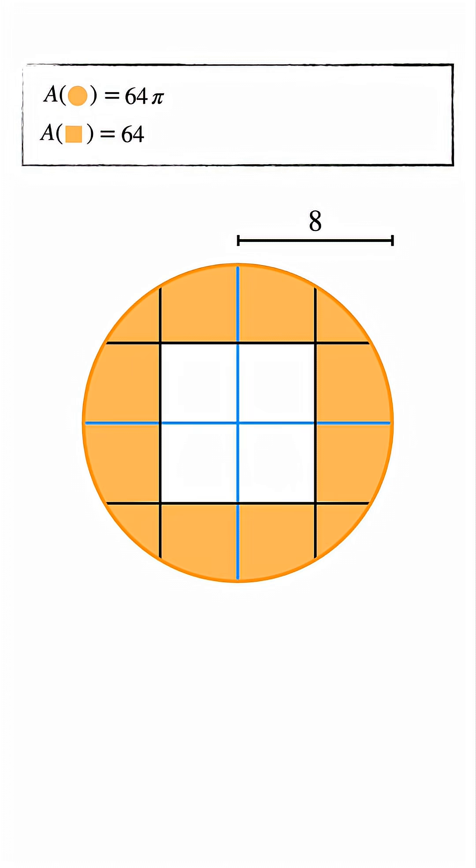Now consider everything inside the circle but outside the central squares. We can find that area by subtracting the square's area from the circle's area. That gives us 64 pi minus 64.